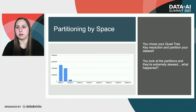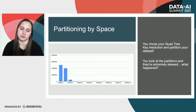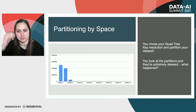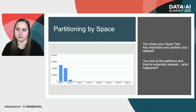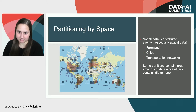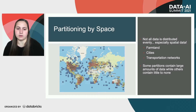So say you decide to partition your data set by space and you choose your quad key resolution — say level 6. You break up the world into level 6, put your data into those different keys as partitions, and then look at your partitions and they're extremely skewed. Most of your data is in two or a few partitions, and some partitions have no data at all. It turns out that not all data is distributed evenly, especially spatial data. Think of farmland concentrated to certain areas, cities, or transportation networks — none of those are going to be evenly distributed across space over the world.